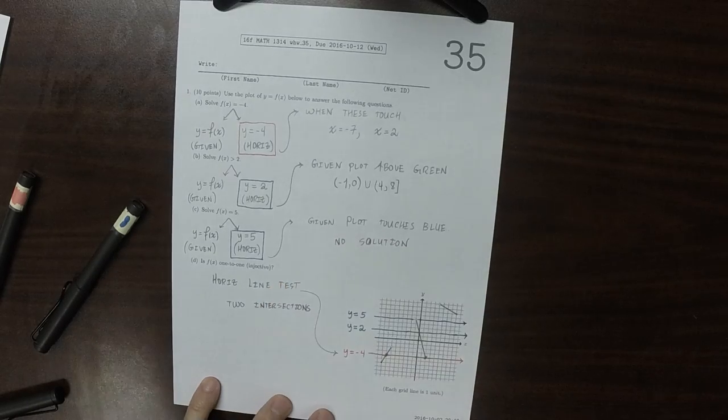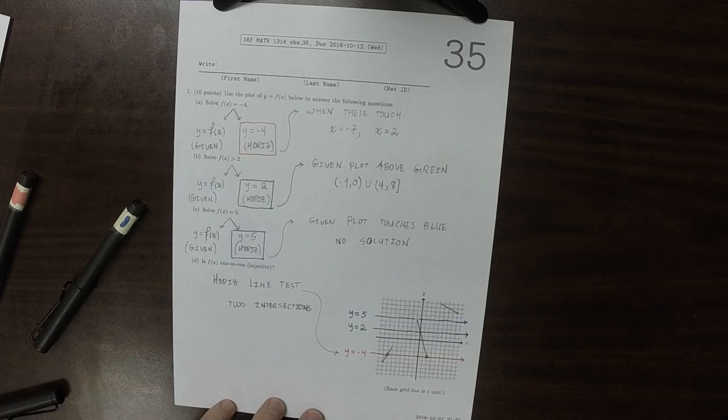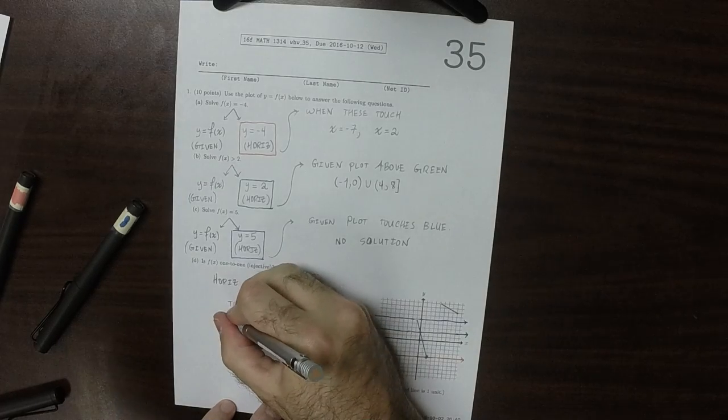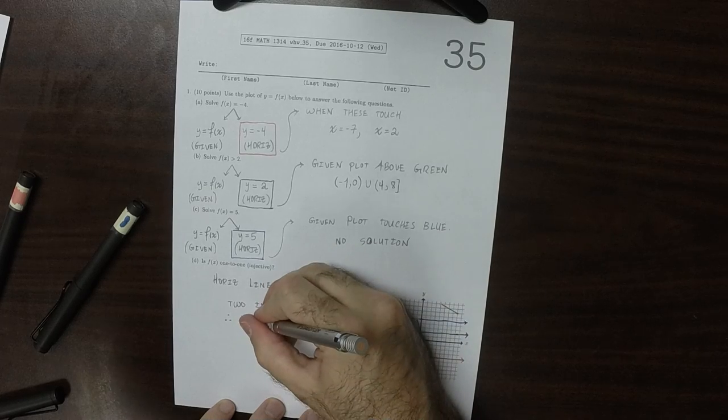And the horizontal line test says that a function is 1 to 1 only when every horizontal line intersects 0 or 1 times. So therefore the answer is no. It is not 1 to 1.